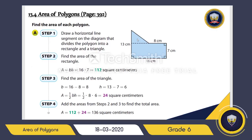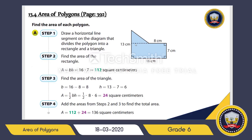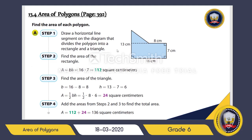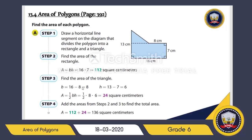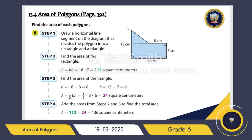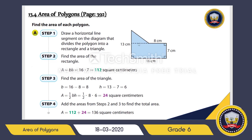Now for the triangle — remember it's base times height divided by two. What is the base? It is the total base of 16 minus 8 centimeters. So the base for the triangle is 16 minus 8, which equals 8. What is the height? It is the total height of 13 minus this length of 7, so 13 minus 7 equals 6. The height is 6 and the base is 8.